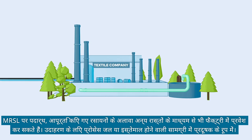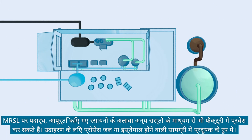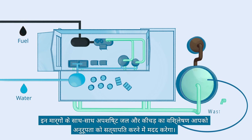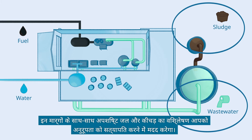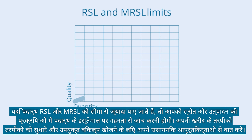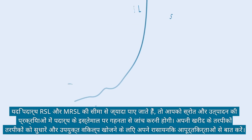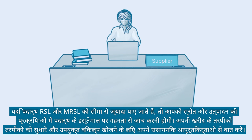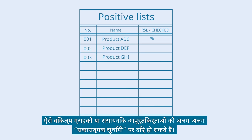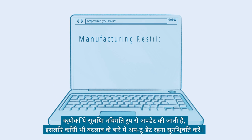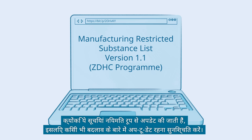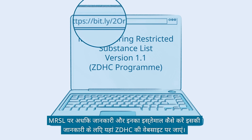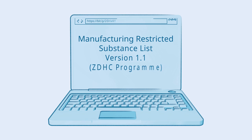Substances on the MRSL may also enter the factory through pathways other than supplied chemicals — for example, as contaminants in process water or input materials. An analysis of these pathways, as well as of wastewater and sludge, will help you verify conformance. If substances are found beyond the limits on the RSL and MRSL, take a closer look at the source and use of the substance in your production process. Adjust your procurement practices and talk to your chemical suppliers to find suitable substitutes, which may be listed on separate positive lists. Since these lists are updated regularly, make sure to stay up to date about any changes. For more information on MRSL and how to use it, visit the ZDHC website here.